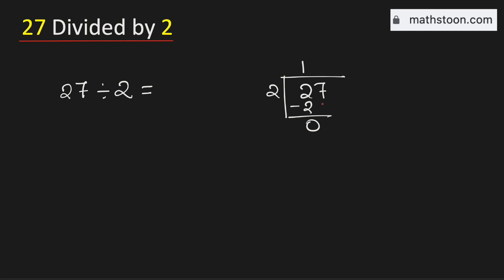0 is less than 2, that is why we need to bring down this number 7 here. Now we will remove this 0 because there is no meaning of zeros on the left.